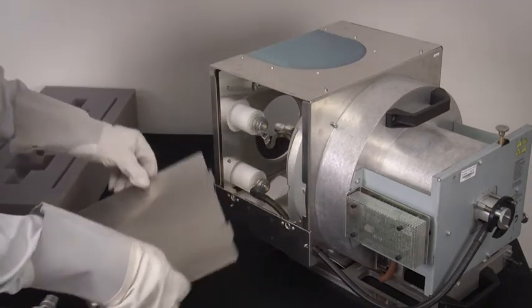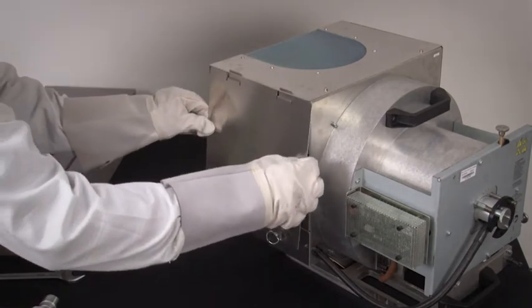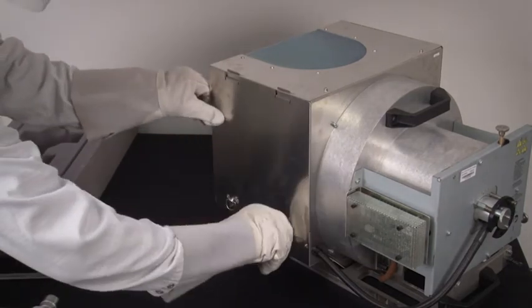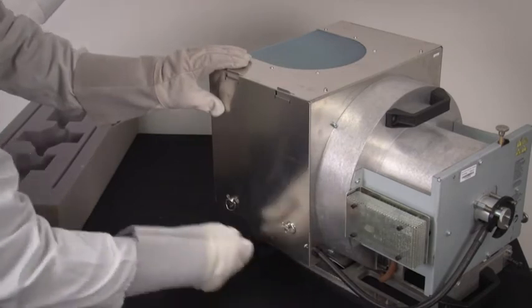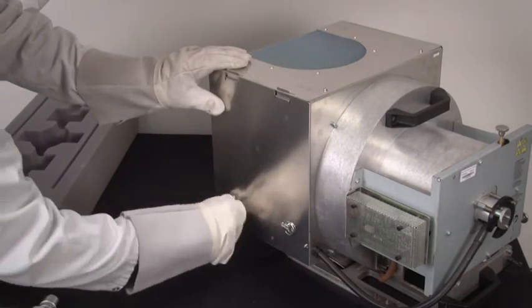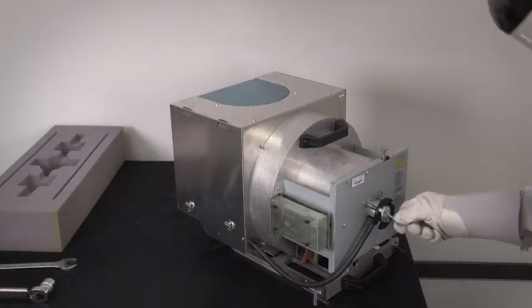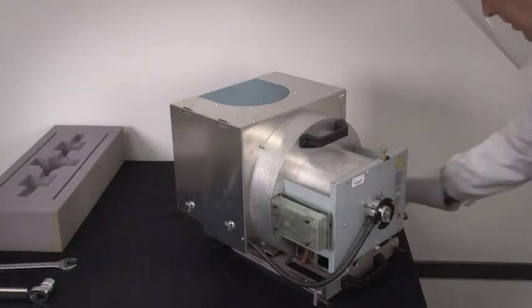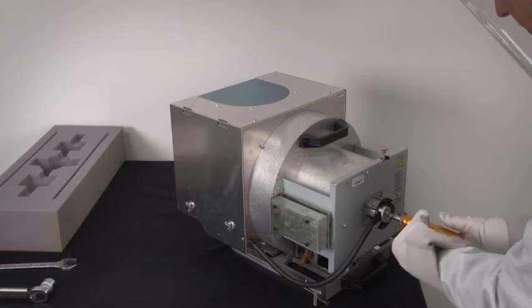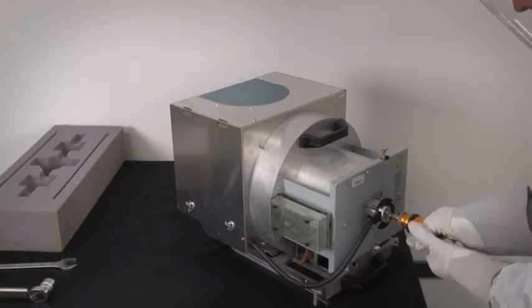Place the side cover back onto the lamp house and tighten the two retaining locking thumb screws to secure the side panel. Insert the cathode bolt back into the rear of the lamp house with a 5mm torque wrench and tighten to the proper torque specifications.